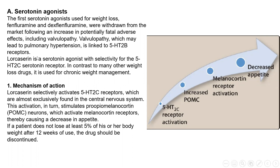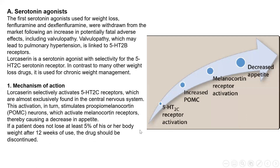After that, a third drug was developed that is more selective for another subclass, serotonin receptor 2C. This receptor is mostly found in the CNS, so there is a significant decrease in the incidence of valvulopathy. This drug, lorcaserin, is an agonist for 2C. Activation of this receptor causes an increase in POMC (pro-opiomelanocortin), which activates the melanocortin receptor, resulting in a decrease in appetite.